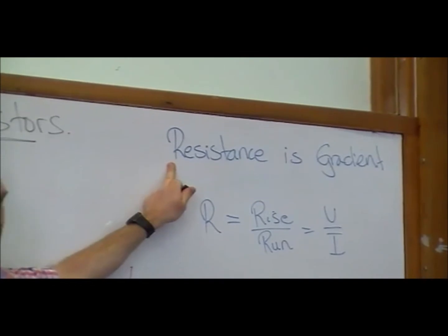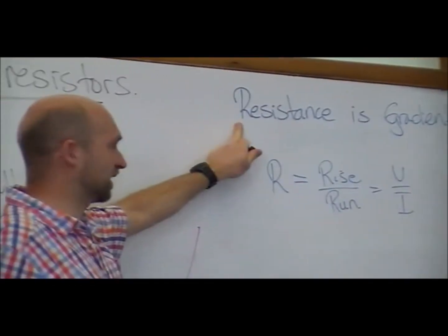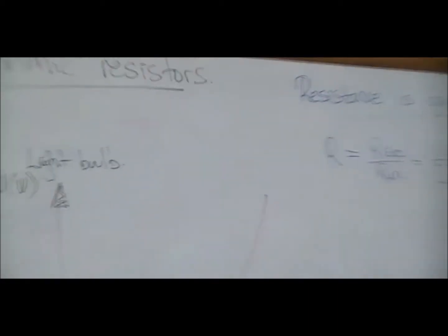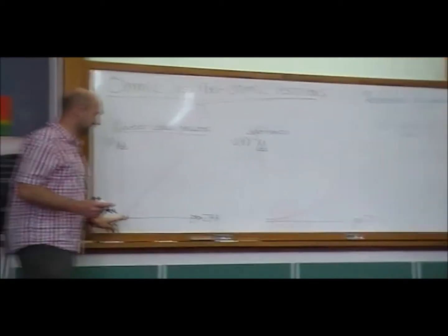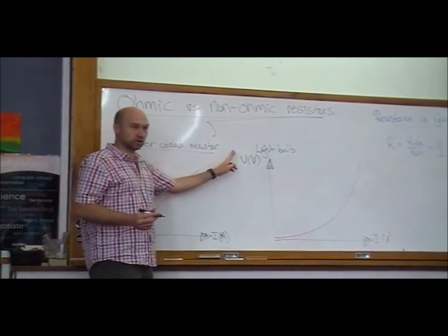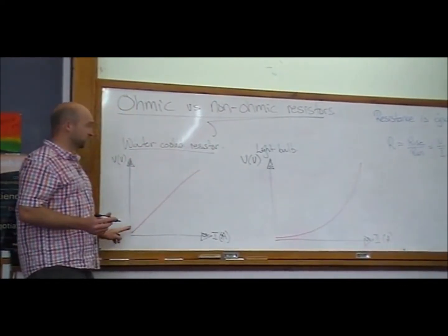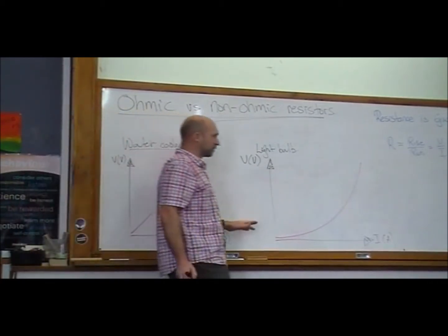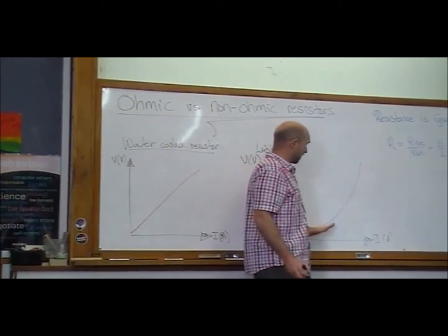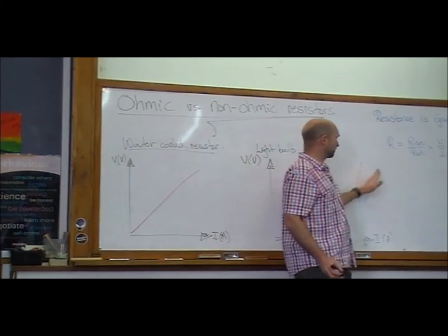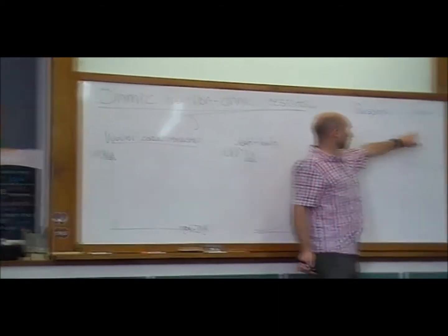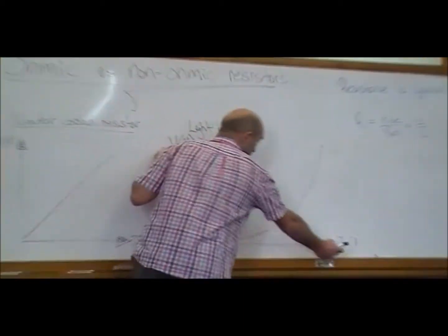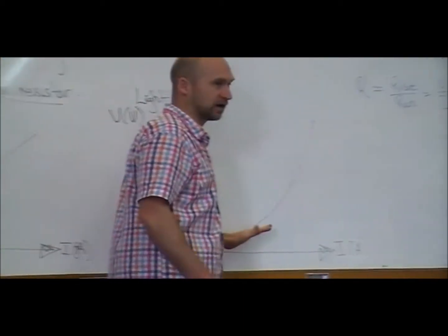That we can look at the steepness of the graph and be like, the steeper that graph is, the higher the resistance is. We can really easily understand what's going on. We can see that on a water-cooled resistor that the resistance stayed constant no matter how much the voltage was. But on the light bulb, we can see that that gradient gets steeper and steeper and steeper. And because resistance is voltage over current, is rise over run, and the rise is the voltage and the run is the current, we can see that that steeper line means a greater resistance.